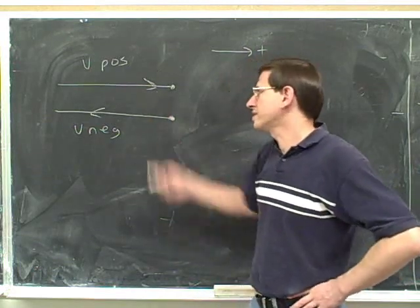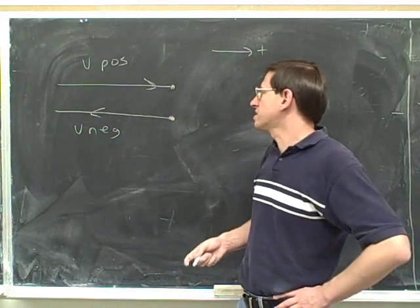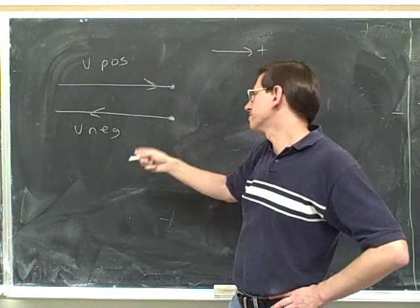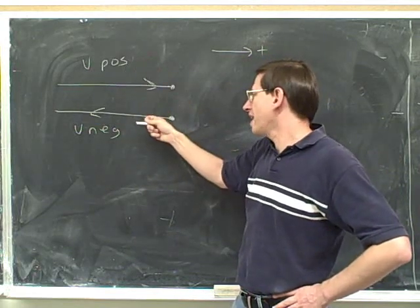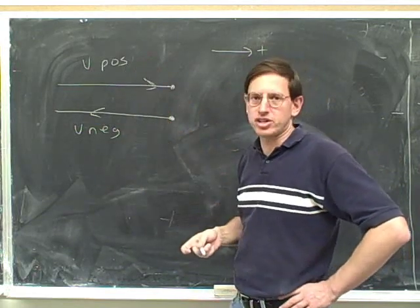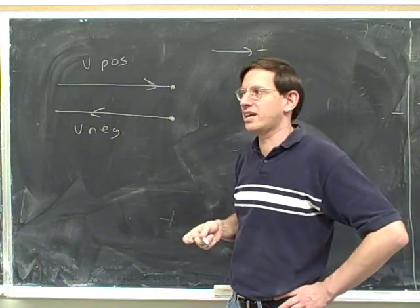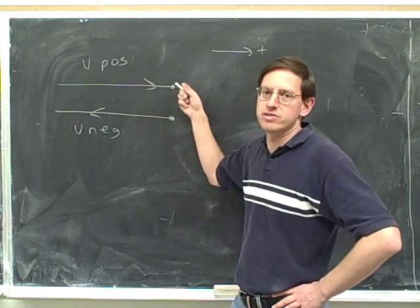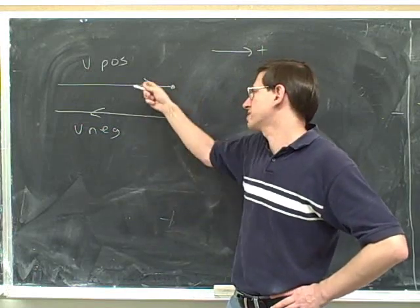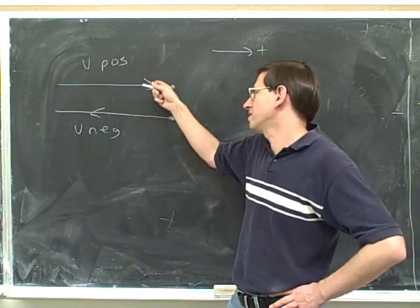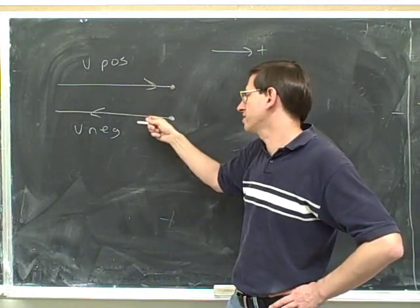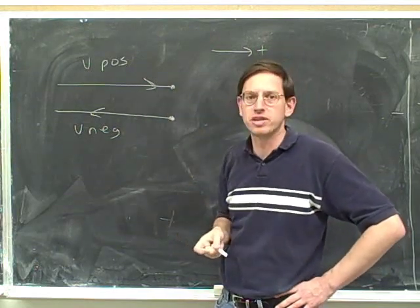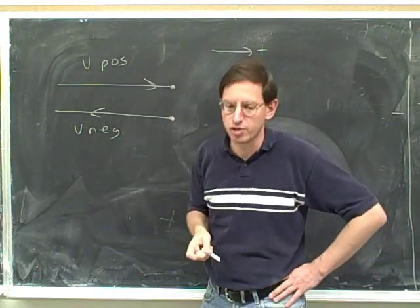The instant before we changed direction, the velocity was positive. And the instant after we changed direction, the velocity is negative. Well, the velocity can't just jump — it has to pass through zero. So if we're passing from positive velocity on this path to negative velocity on this path, there has to be an instant when we changed direction where the velocity was zero.